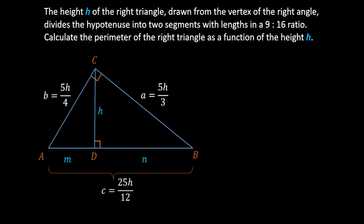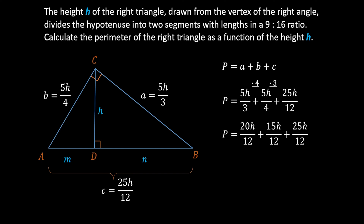Now we calculate the perimeter of the triangle. The perimeter equals the sum of all sides: 5H/3 plus 5H/4 plus 25H/12. Expanding the first fraction by 4 and the second by 3 to get the common denominator of 12 gives 20H/12 plus 15H/12 plus 25H/12, which equals 60H over 12. Simplifying, the perimeter P equals 5H — the perimeter of our triangle is equal to 5 times its height.